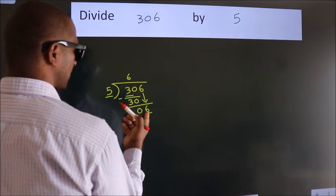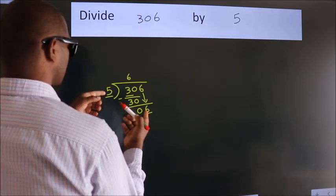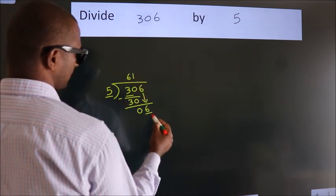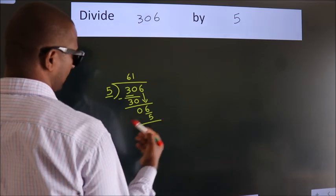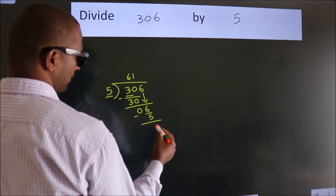A number close to 6 in the 5 table is 5 times 1 equals 5. Now we subtract and get 1.